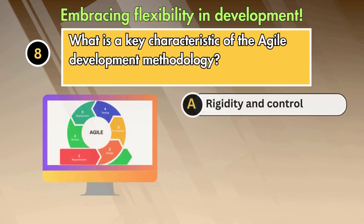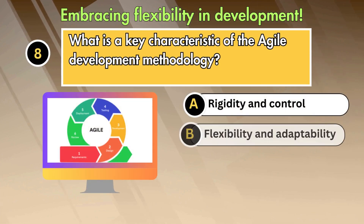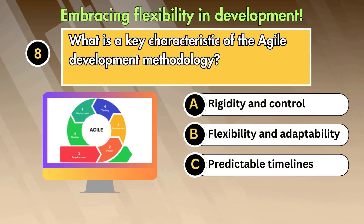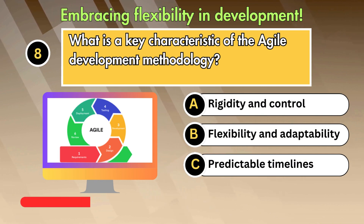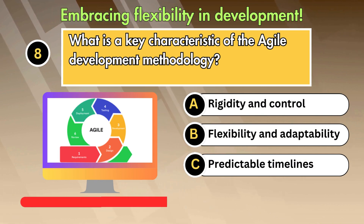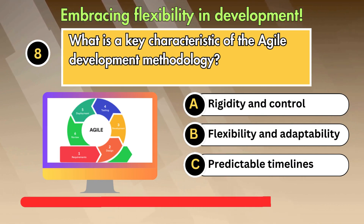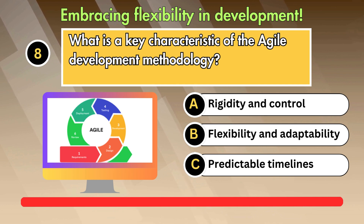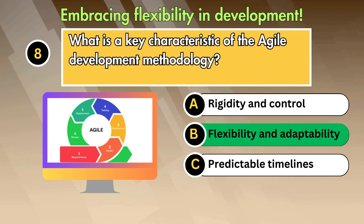What is a key characteristic of the agile development methodology? Option 1: Rigidity and control. Option 2: Flexibility and adaptability. Option 3: Predictable timelines. Answer is Flexibility and adaptability.